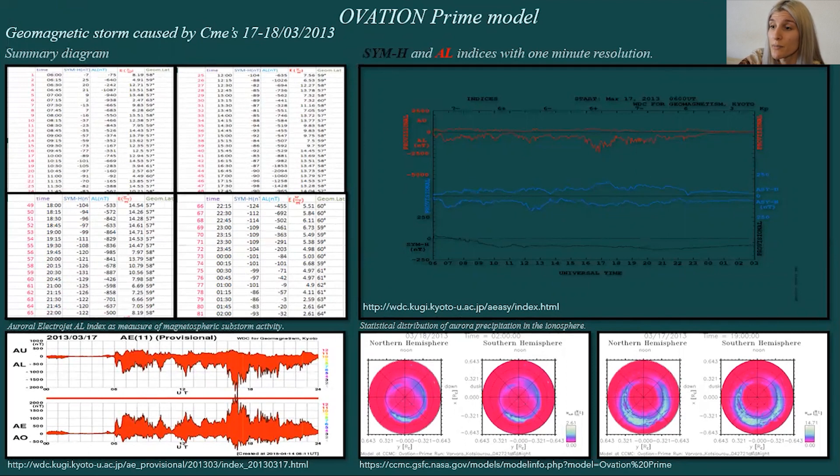To emphasize the factor of magnetospheric substorms, we use the aurora electroject index AL as a measure of magnetospheric substorm activity. We have collected data in 15 minutes intervals and for this reason we use the SYM-H index, a geomagnetic index with one minute resolution.